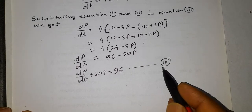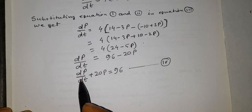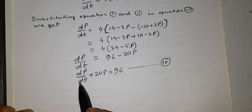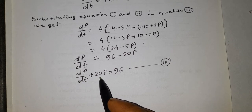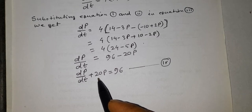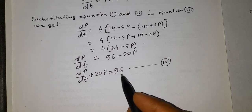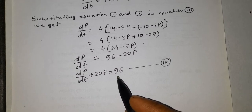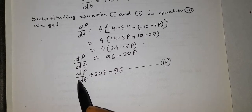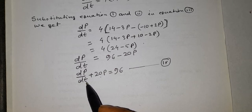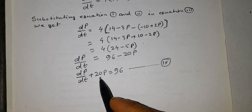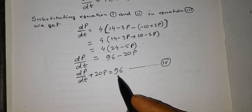Equation 4 is a first-order linear differential equation with constant coefficient 20 and constant term 96, since the power of the derivative term is 1.